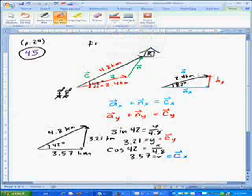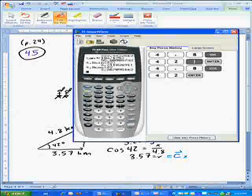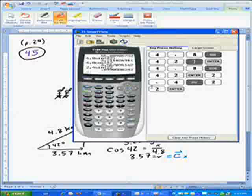So let's solve for each of those. Since I've already got my red pen out, we'll do vector a in the y direction. So that will be the opposite side over the hypotenuse. So sine of 22 equals opposite over hypotenuse, which was 2.4. So I'll just multiply 2.4 times the sine of 22, and I get 0.89, so about 0.9.